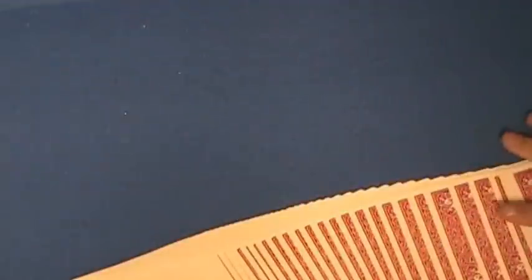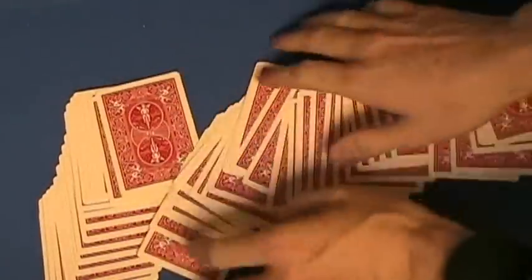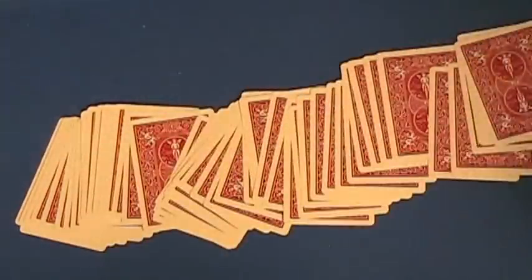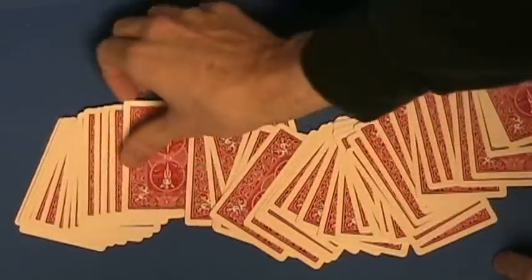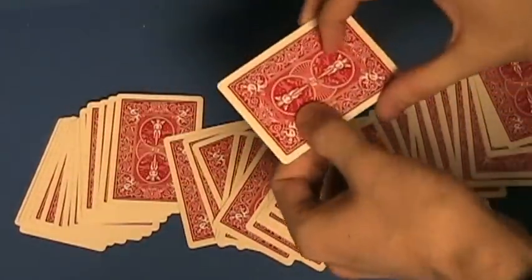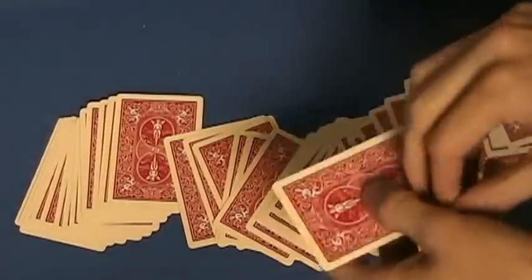So then, you spread through the deck, and you tell an audience member, take out the Jack of Clubs. If they pick out any card, it really doesn't matter. You take a look at it, you don't let them see it. It's the Nine of Spades. Put it aside.